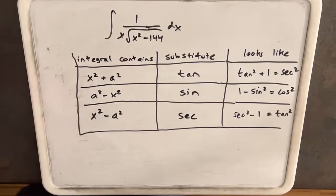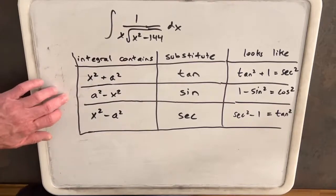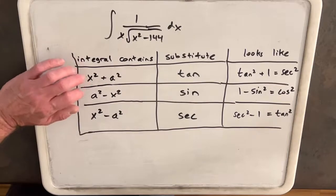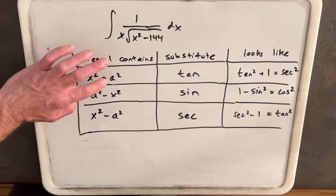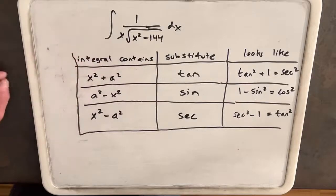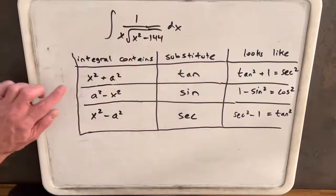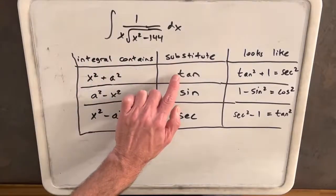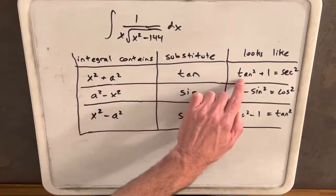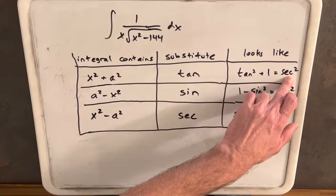This doesn't mean that the trig substitution will always work or be easy, it's just a guideline of what you usually want to try. For example, when our integral has x squared plus a squared, like x squared plus 1 or x squared plus 4, we probably want to try tangent. The reason is if we substitute tangent in for x, we end up with tan squared plus 1, so we can use secant squared.